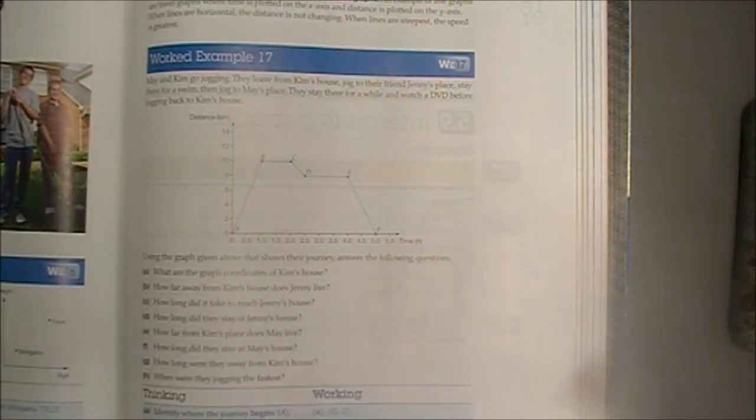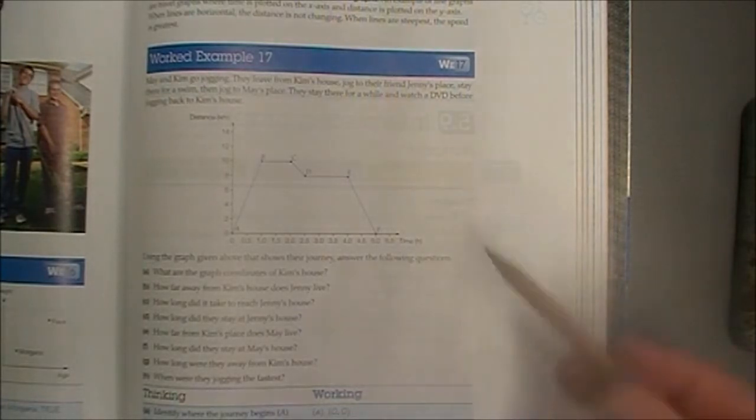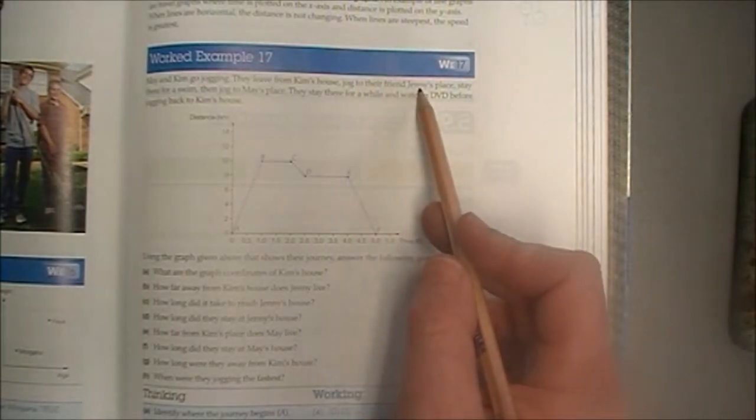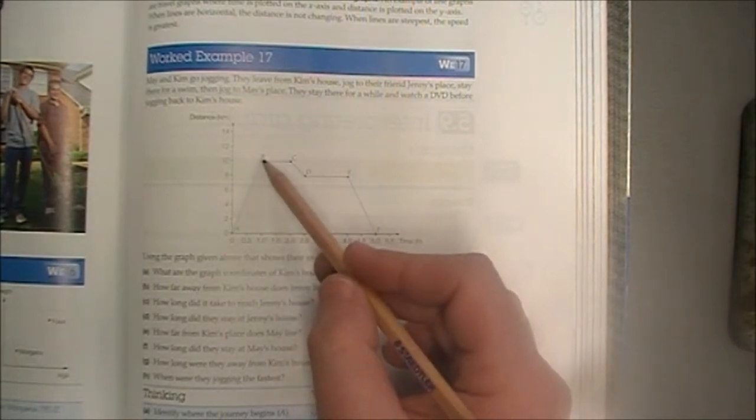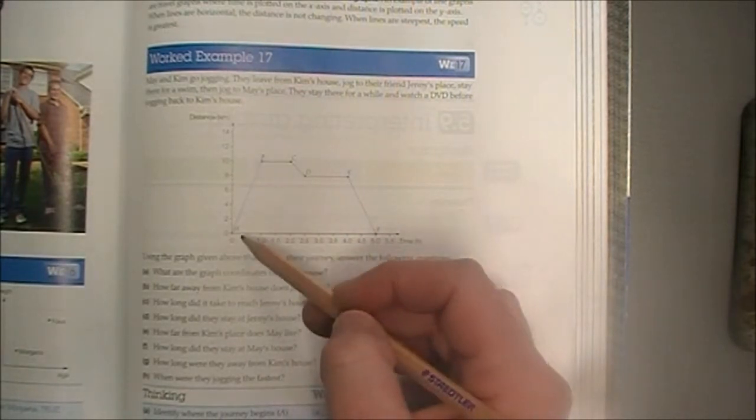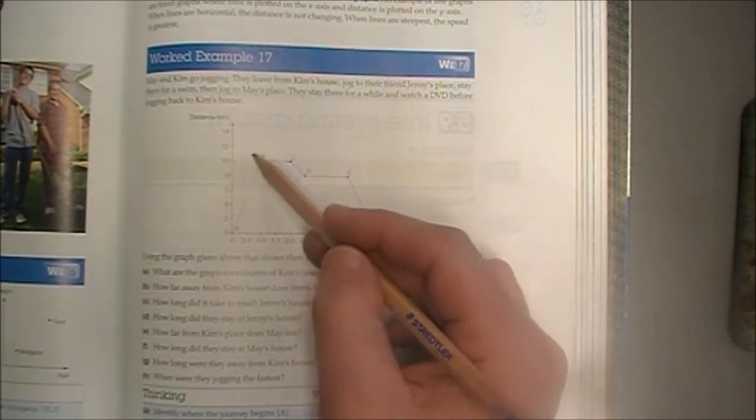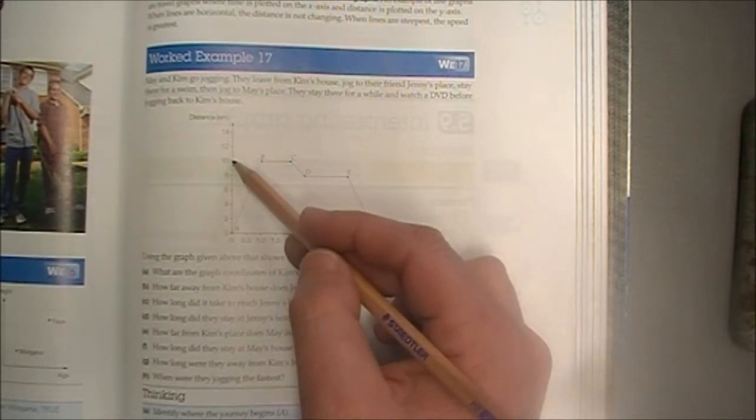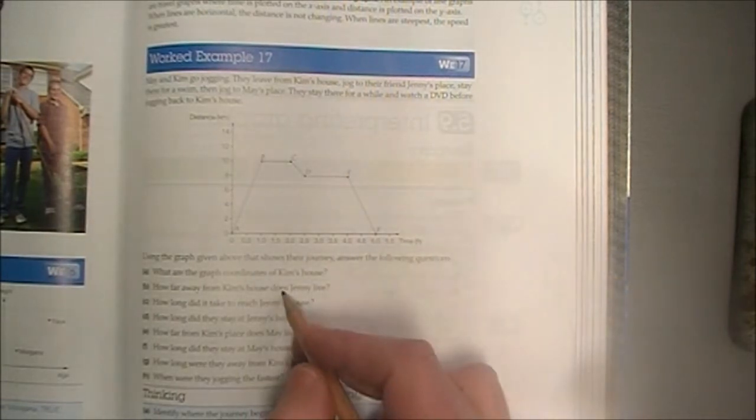How far away from Kim's house does Jenny live? So, it said in the question, Jenny was the first place they went to, which is there. So how far did they travel in that distance to get to B? They travelled 10 kilometres. So that would be 10 kilometres.